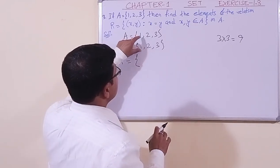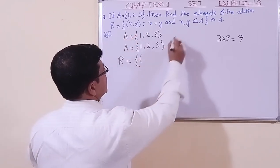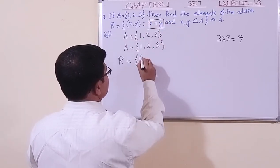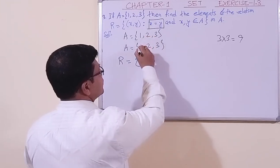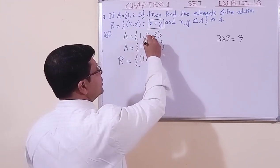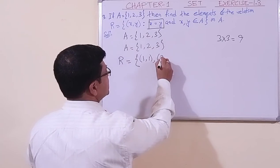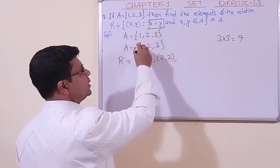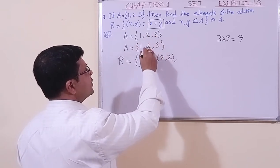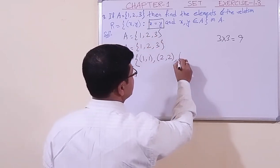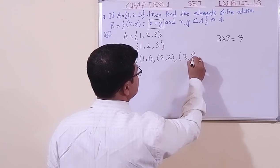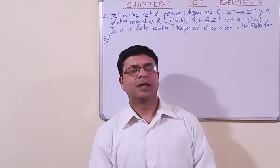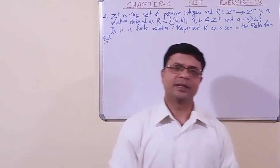The set is {1, 2, 3}, so we take the same set. The condition is that the two elements must be equal. One paired with one equals, two paired with two equals, three paired with three equals. So three is only equal to three. Therefore we can easily construct the relation R = {(1,1), (2,2), (3,3)}.